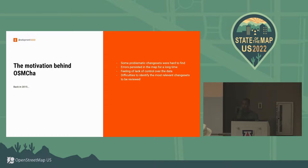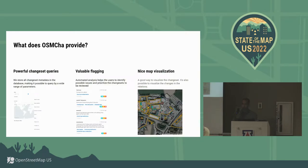We had lots of difficulties identifying the most relevant changesets to review. So I created something to register the changesets from OpenStreetMap, make them searchable, and provide some analysis — some automated flagging that inputs information on the changesets to provide tips about what could be wrong. We also have a very nice map visualization.